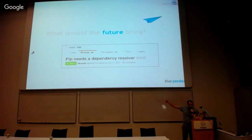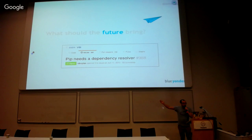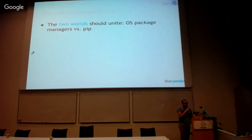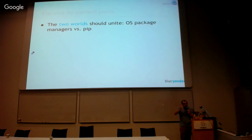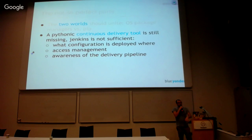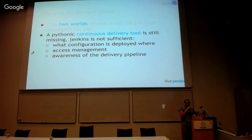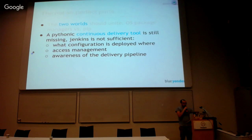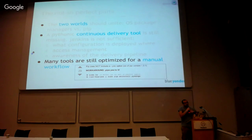Here's a GitHub issue from 2013 — it's still open with 35 comments: pip needs a dependency resolver. That's the state of the Python world. Guido, the inventor, doesn't really like this topic. A really big problem is that in the Python world we have two worlds: the pip dependency stuff and the system stuff. One is maybe done by operations guys, the other by developers, and that's really not an ideal way. It's still lacking a real end-to-end continuous delivery tool where we really know which artifact was deployed.